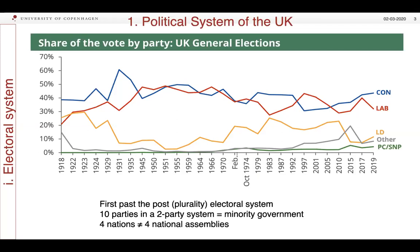The British electoral system is based on what's known as first-past-the-post, or plurality electoral system. That is, the person that gets the most votes in each constituency — that is like a commune area — is elected the winner, even if that person doesn't get more than 50% of the votes. And so what this in effect does is produce majorities in the House of Commons. This is often called a two-party system, because it tends to give rise to only two parties capable of holding power.